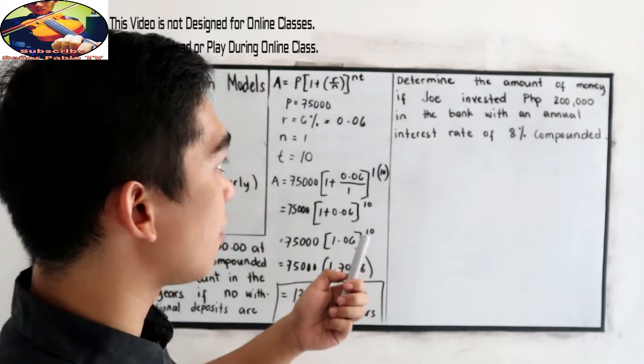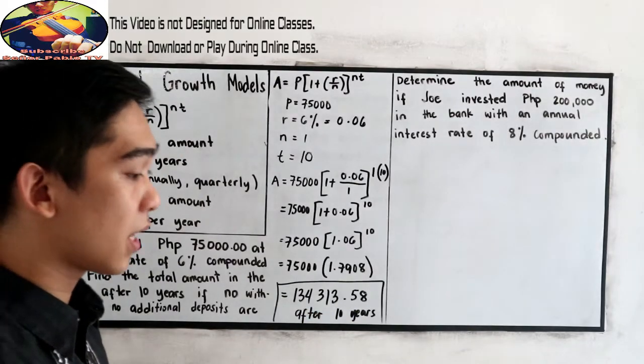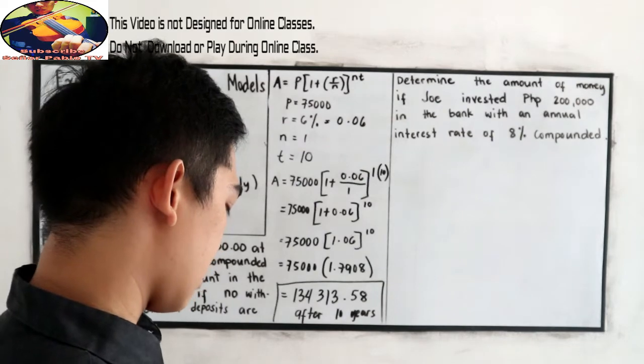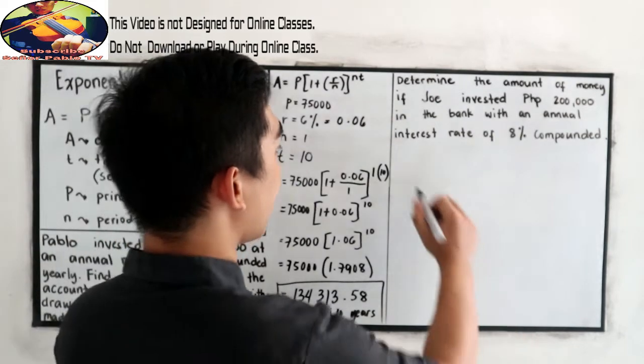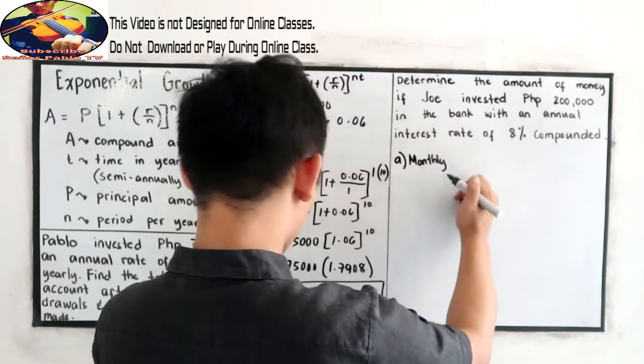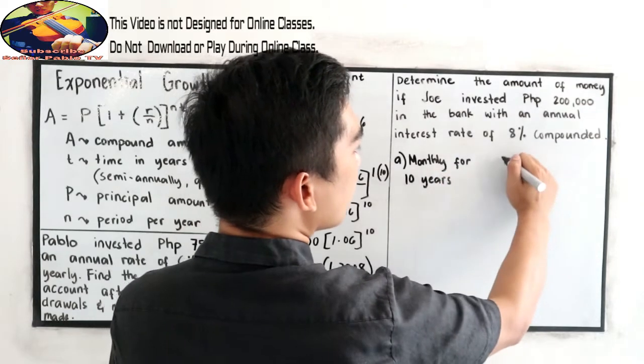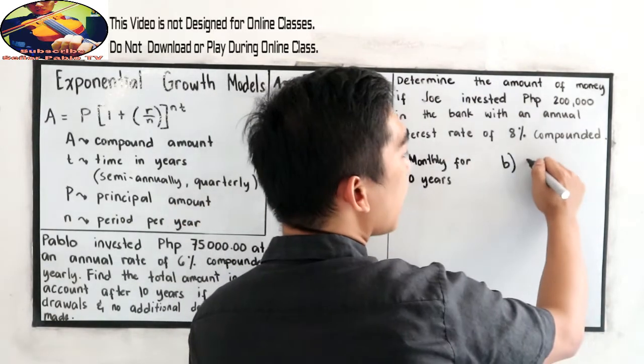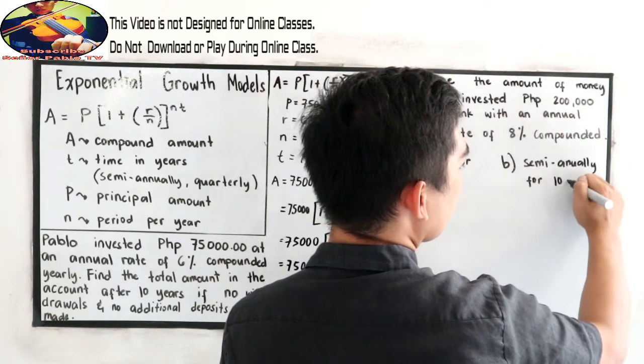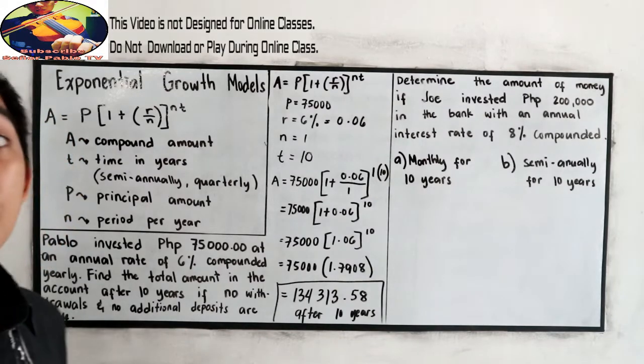Determine the amount of money if Joe invested 200,000 in the bank with an annual interest rate of 8% compounded. We are going to find letter A, monthly for 10 years. And letter B, semi-annually for 10 years.